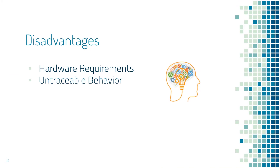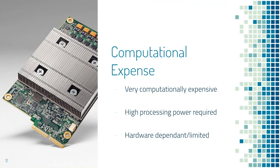Moving on to disadvantages of neural networks. Two main disadvantages are that they're very hardware-dependent and their behavior is untraceable, meaning we give the neural network an input, it spits out an output, and we can't interpret what goes on in between. Neural networks are extremely computationally expensive compared to other systems. They were very big in the mid-to-late 20th century, but were actually unusable until the hardware caught up in the 21st century. Neural networks require processors with parallel processing power, meaning they run on multiple processors, whether it may be a CPU, a central processing unit, a GPU, a graphical processing unit, or even a TPU, a tensor processing unit.